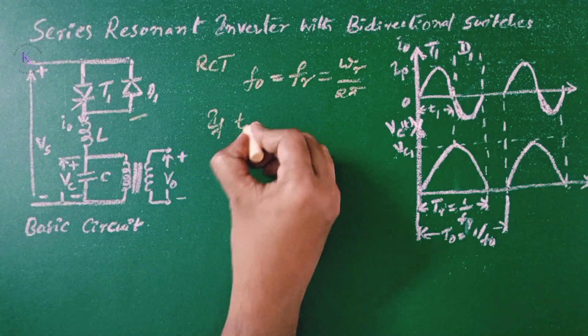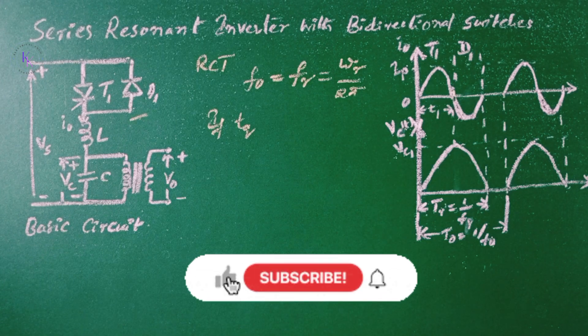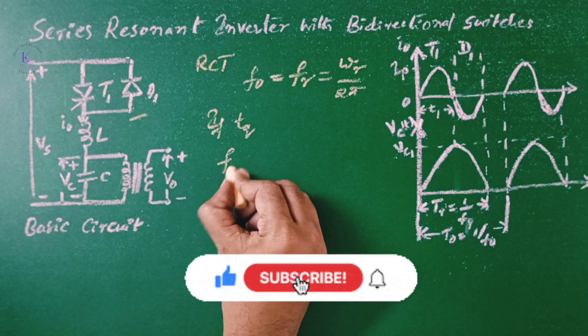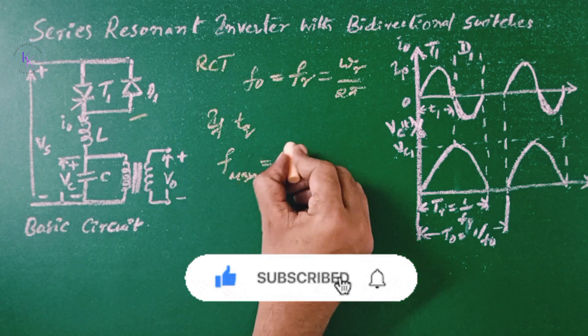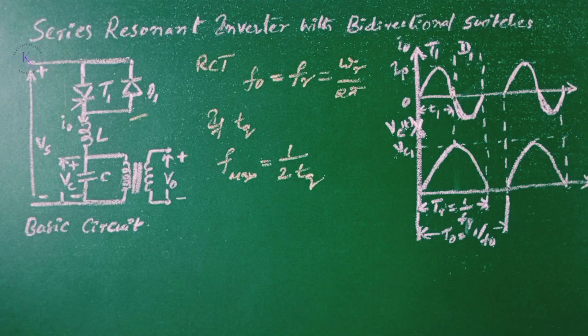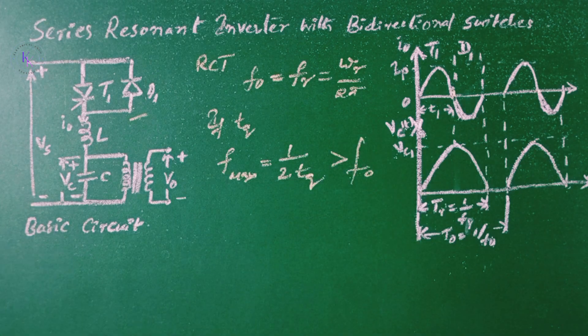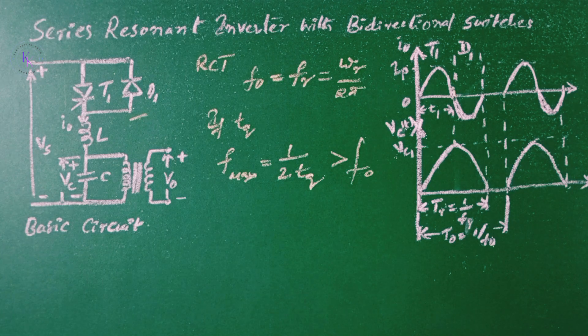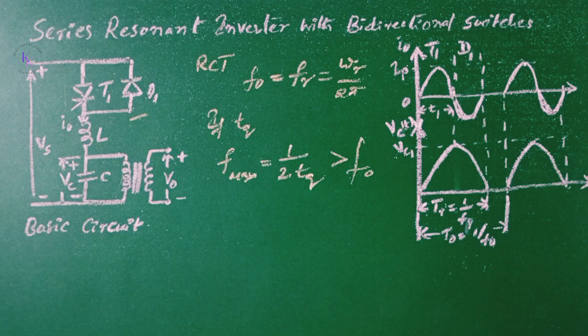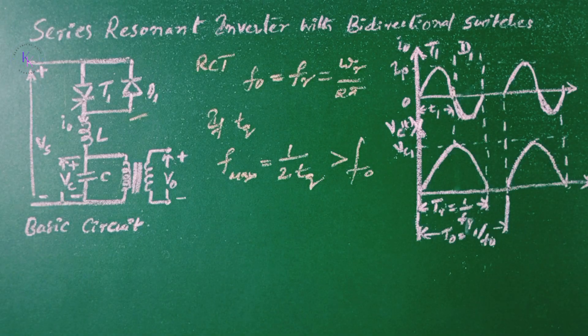If the turn-off time of the thyristor TQ, the maximum inverter frequency is given by F max equals 1 by 2 times of TQ. F0 should be less than F max or else this should be greater than F0. This is the basic circuit diagram of a series resonant inverter with bidirectional switches and these are the waveforms of output voltage here and voltage through the capacitor.